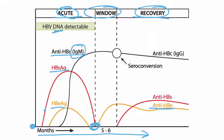The marker reliably detected during the window phase is the IgM antibody. Near the end of the window phase, two things occur: first, seroconversion, and we will see IgG antibodies present against the core antigen. Second, antibodies against the surface will develop — and these are the antibodies you really want, because they indicate immunity, as we discussed in the table.